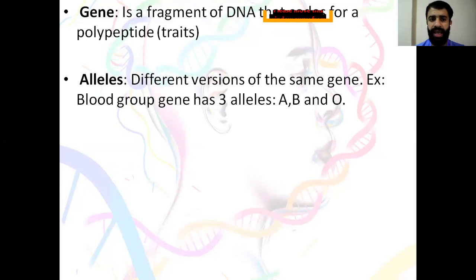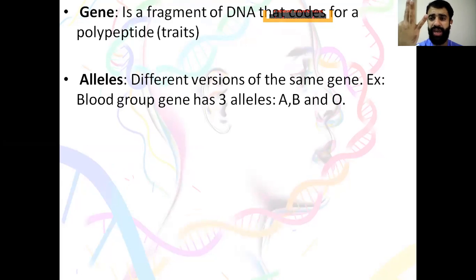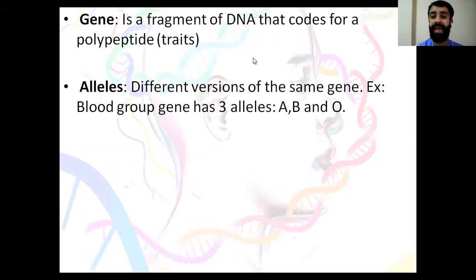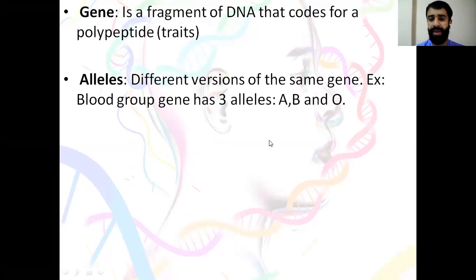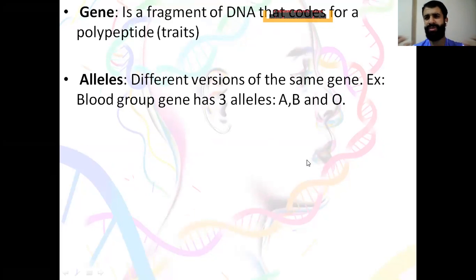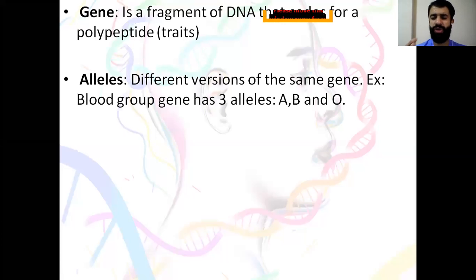What are alleles? Alleles are different versions of the gene. For example, we have the gene for the blood group, and this gene has three different alleles: allele A, allele B, and allele O. A and B are both dominant, while O is the recessive — the weak one. So alleles are different versions, or different models, of the same gene.